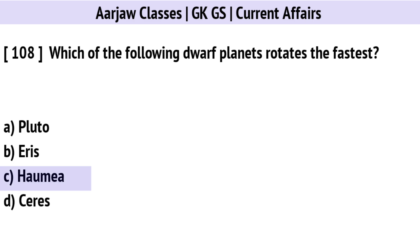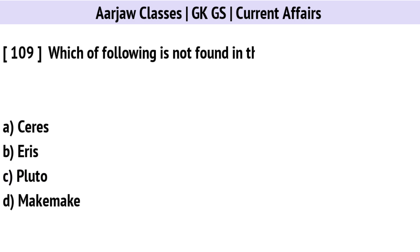Which of the following dwarf planets rotates the fastest? Correct option is C: Haumea.